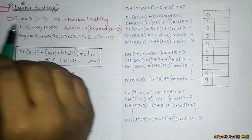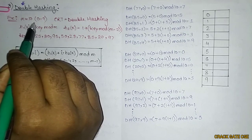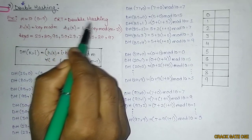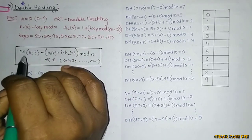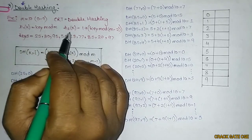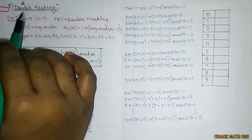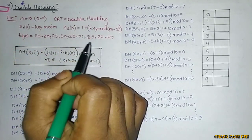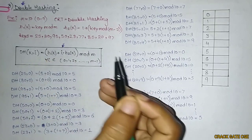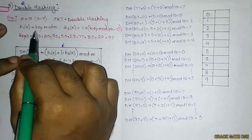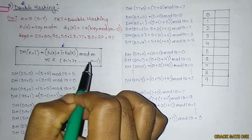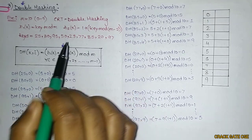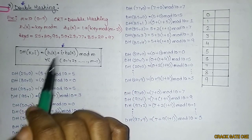In double hashing we probe on the basis of two different functions and store the values accordingly. Let's understand this with an example. Here m equals 10, that is a hash table of size 0 to 9. The collision resolution technique is double hashing. We have two hash functions: h1 and h2. These are the keys, and for double hashing we have a particular formula using both hash functions to compute the next available slot.